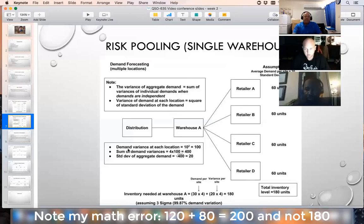Now, what we need to provide the supply for the retailers to be kept at warehouse A is your original demand, which is 30 per site, plus 20 times 4, which is 80. So now, as a total, we need 180 units kept at warehouse A. Note that the average demand per site is the same, and the standard deviation per site is the same.